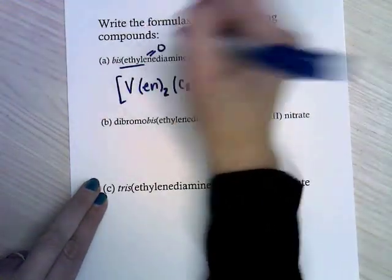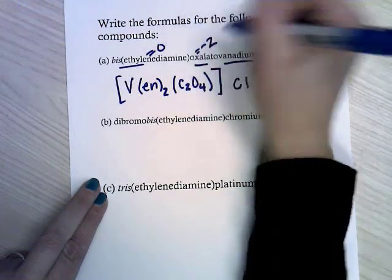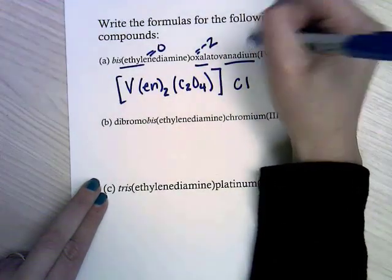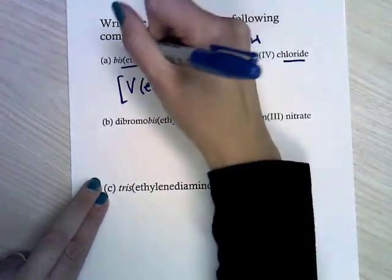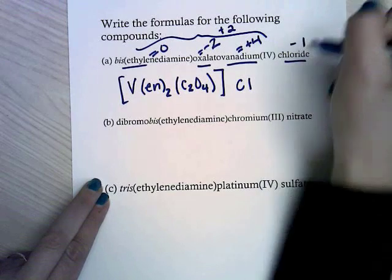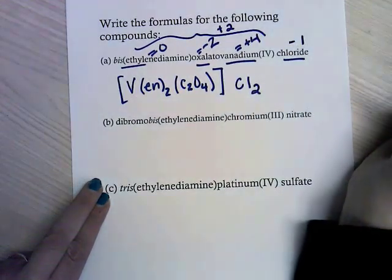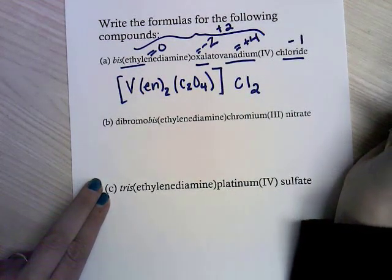Now I need to deal with the charge and make sure I've got it neutral. Ethylenediamine is neutral. Oxalato is negative 2. My vanadium is plus 4, so my total cation charge is plus 2, and chlorine is minus 1. So I'll need two chloride ions to cancel that out.